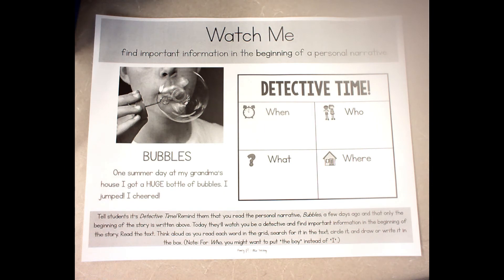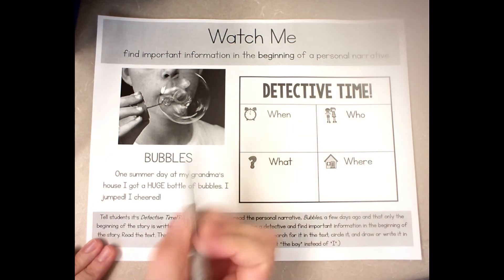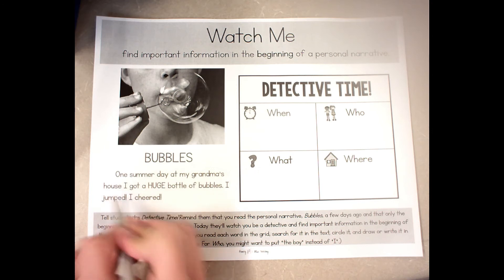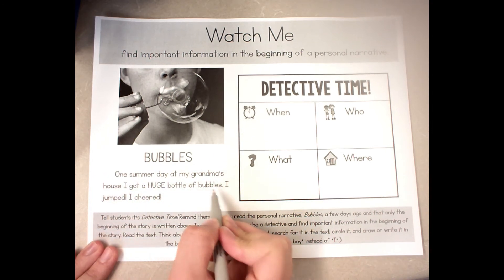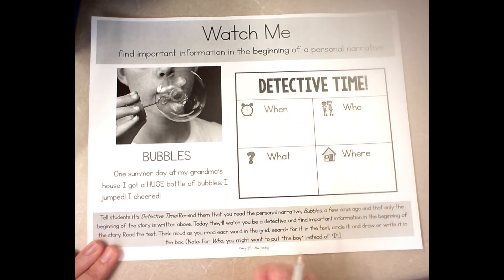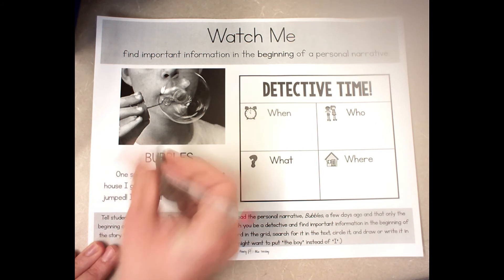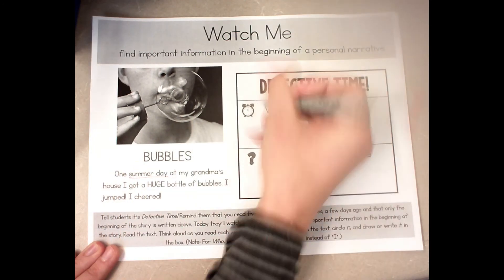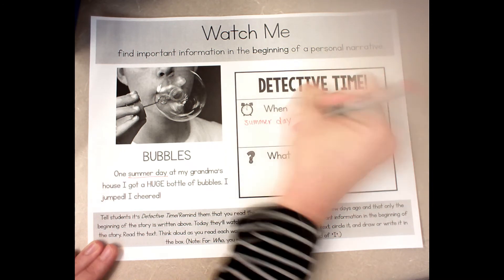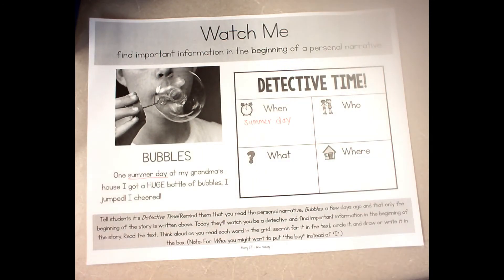Ms. Chapman is going to be a detective and try to figure out the who, what, when, and where in this story. This story is called 'Bubbles.' It begins: 'One day at my grandma's house, I got a huge bottle of bubbles. I jumped. I cheered.' Now I'm going to look for the when — when did this story happen? That's right, it happened on a summer day. So I'm going to write down 'summer day.'